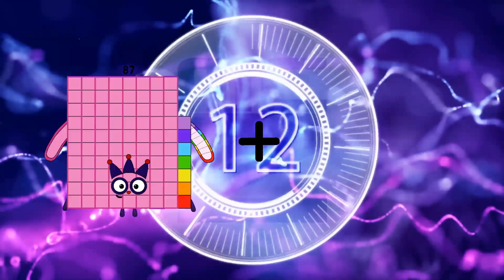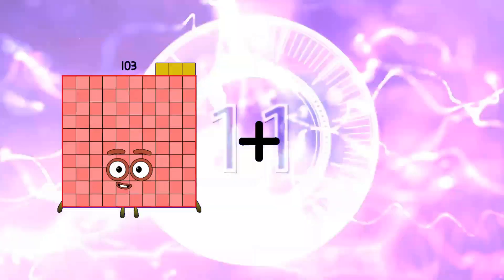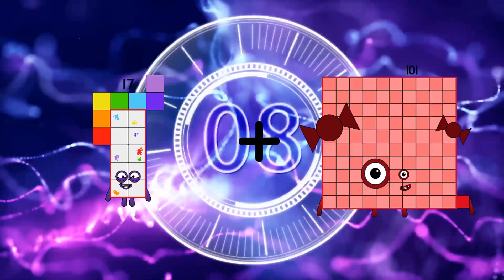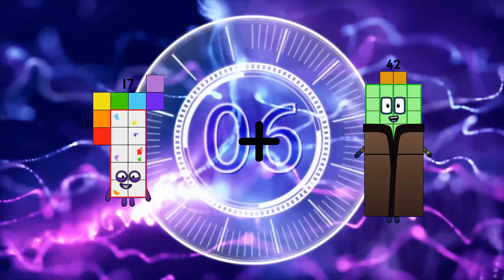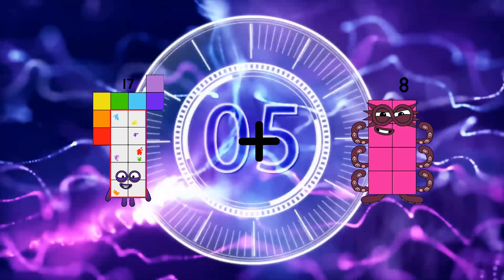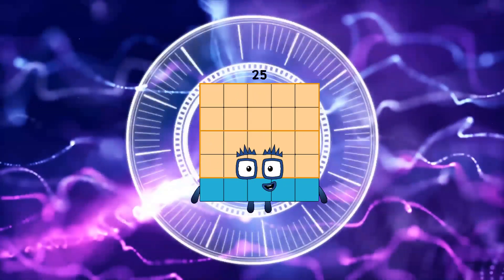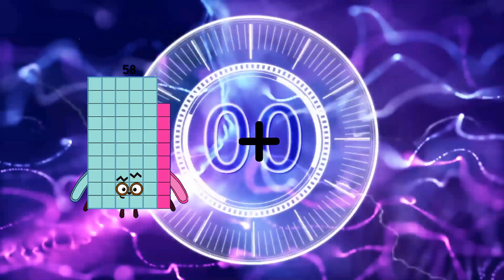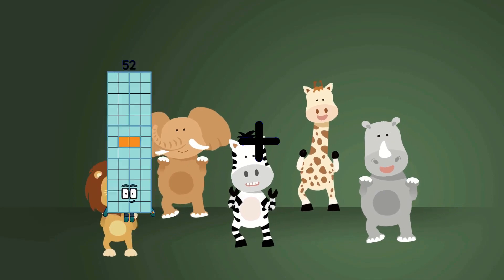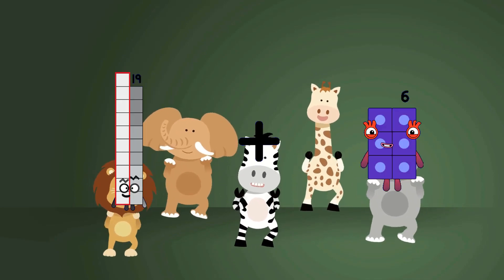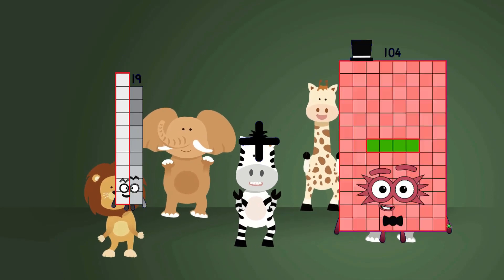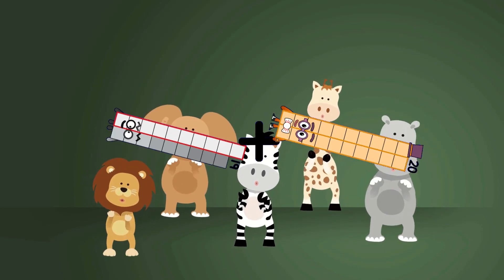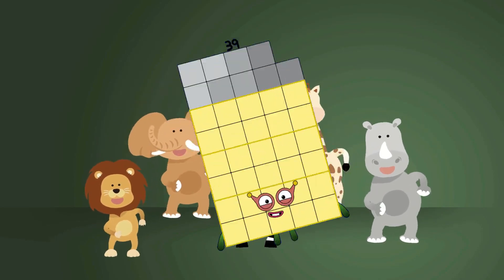17 plus 8 equals 25. 19 plus 20 equals 39.